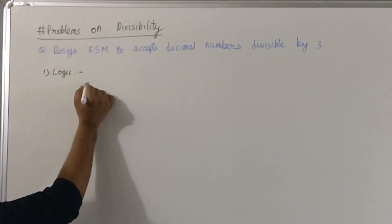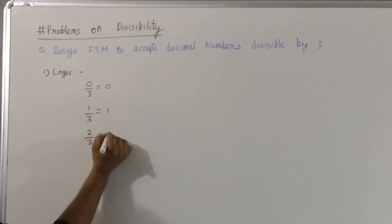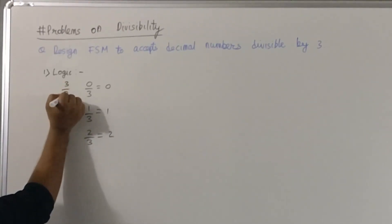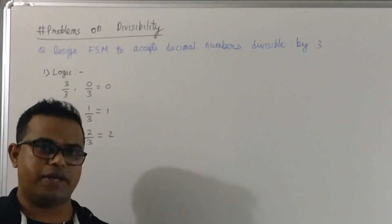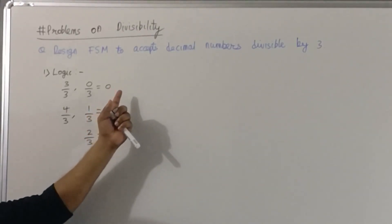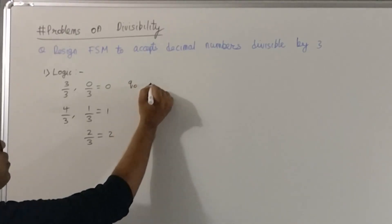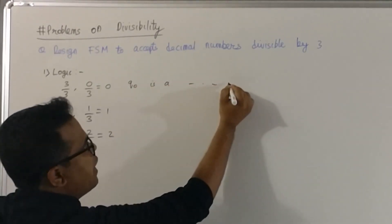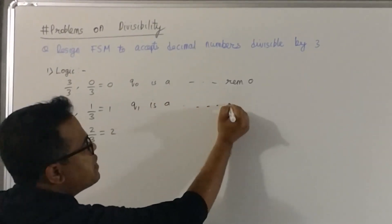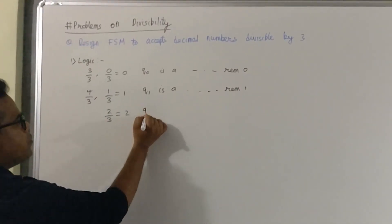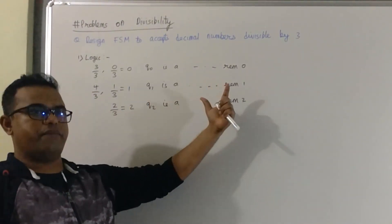If I divide 0 by 3, the remainder will be 0. If I divide 1 by 3, remainder will be 1. 2 by 3, remainder will be 2. Similarly, if I divide 3 by 3, I get remainder 0. 4 by 3, I get remainder 1. So if you divide any decimal number by 3, we are sure to get a remainder of either 0, 1, or 2. This is my state formation logic.